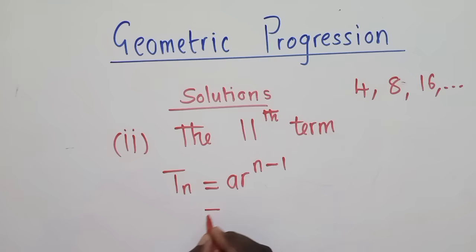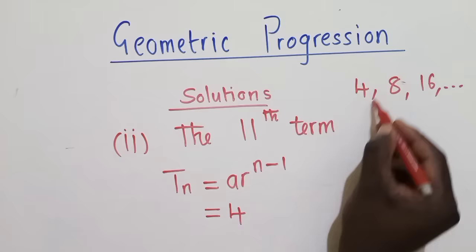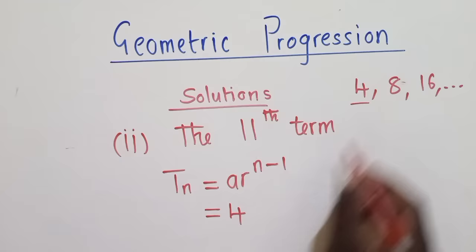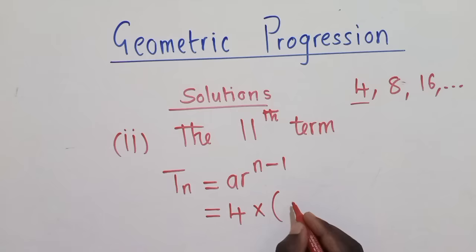On the formula here, what is our A? Our A would be 4, the number that is starting the sequence. Always, the number that is starting is your A. And then you say times. What is our r? In this case, our r is 2. Hopefully, you can see our r is 2.